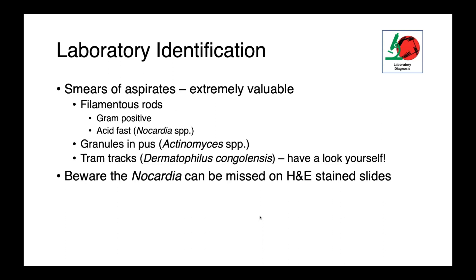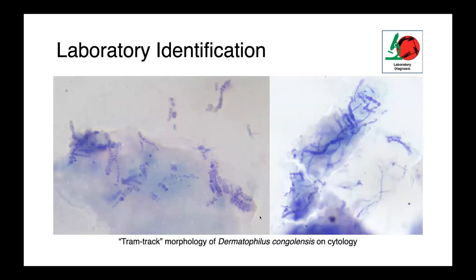I would encourage you to look for yourself — these are things you may be able to come to a presumptive diagnosis on before receiving laboratory guidance. For Nocardia species specifically, it's important to know that these can be missed on hematoxylin and eosin-stained slides, as they don't stain very well, so false negatives are certainly a concern. I've talked about the tram-track morphology of Dermatophilus congolensis, and here we have a cytology preparation from an affected animal showing those very characteristic double rows of zoospores. There is really nothing else that looks like this, so this gives you a very good idea of what's going on in a patient.